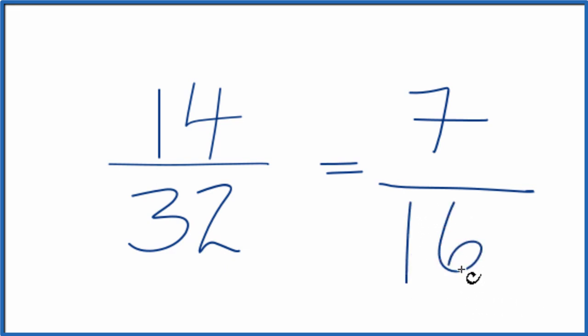So we end up with the fraction 7/16. When we simplify 14 over 32, we get 7/16, and we can't reduce this any further.